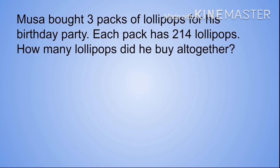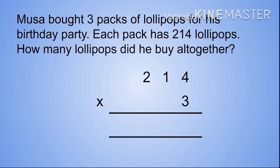Our final word problem. Musa bought 3 packs of lollipops for his birthday party. Each pack has 214 lollipops. How many lollipops did he buy altogether? Our equation will then be 214 times 3.